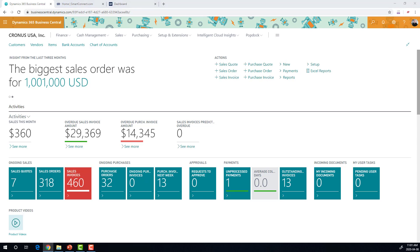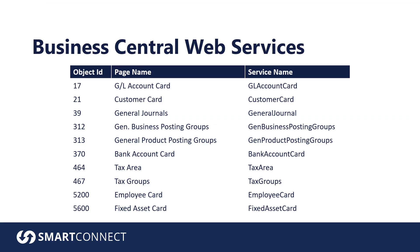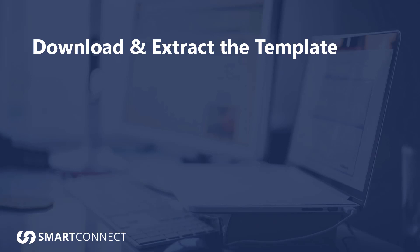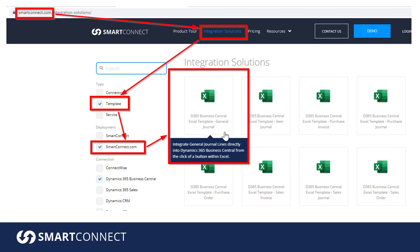So now let's pop back over to our PowerPoint. These are all of the services that we're going to need you to publish. These are the service names right here that we need you to enter in. Capitalization is important. Go ahead and pause the video, go through your Business Central, and set up all 10 of these objects. The next thing you need to do is actually download and extract the template — it's pretty straightforward.